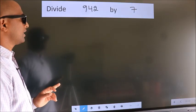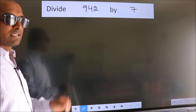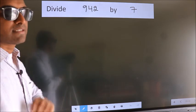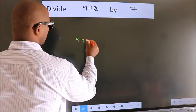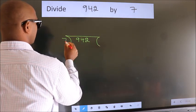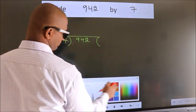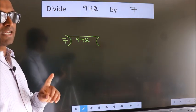Divide 942 by 7. To do this division, we should frame it in this way. 942 here, 7 here. This is your step 1.